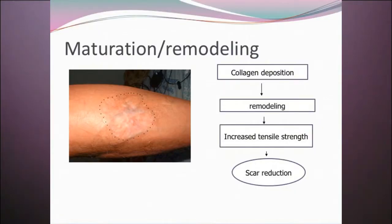Many clinicians, once they see a wound has closed with a new layer of epithelial tissue, think it is fully healed. However, while the wound may be closed, it hasn't completely finished the healing process. This brings us to the next phase — maturation, sometimes called remodeling. You will see both terms used in the literature.